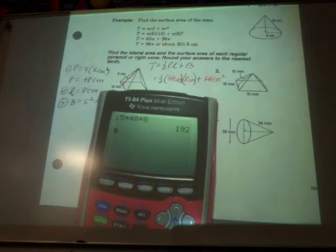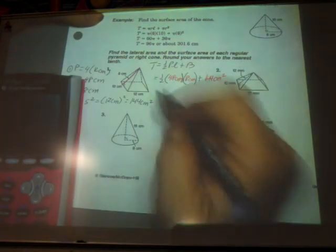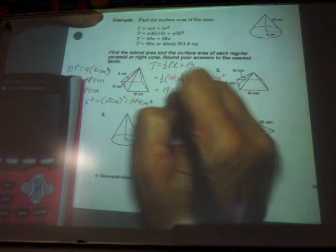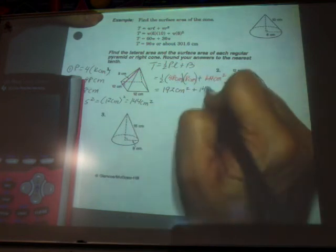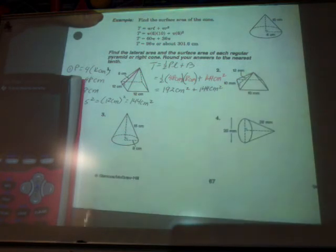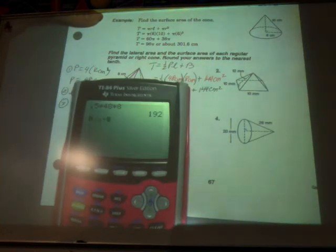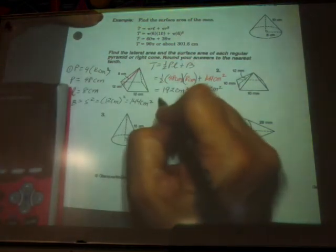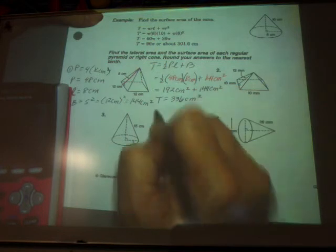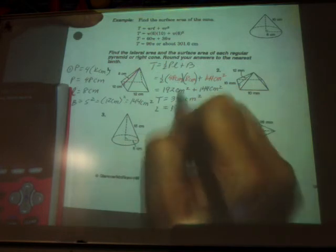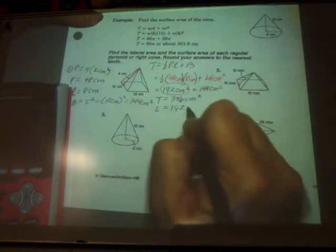And I'm going to calculate one half, so 0.5 times 48 times 8. So the 192 represents what? The lateral area. 192 centimeters squared, plus 144 centimeters squared. So now I'm going to add the 144 to the 192, and I get 336. So total surface area is 336 centimeters squared. Lateral surface area is the 192 centimeters squared.